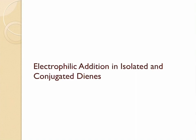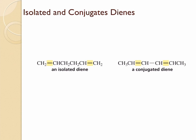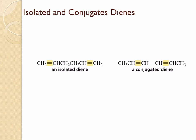Electrophilic addition in isolated and conjugated dienes. Dienes can be of two different types: isolated dienes and conjugated dienes. In isolated dienes the electrons are localized and cannot shift onto any atom, but in conjugated dienes, since there are alternate double and single bonds, the electrons can get delocalized. Hence the reactivity of conjugated dienes towards electrophilic addition reaction will be different.